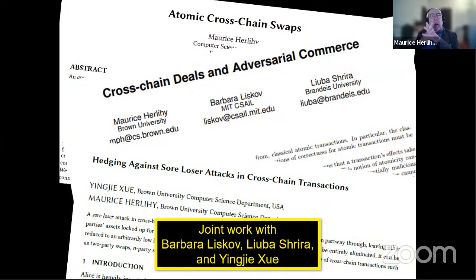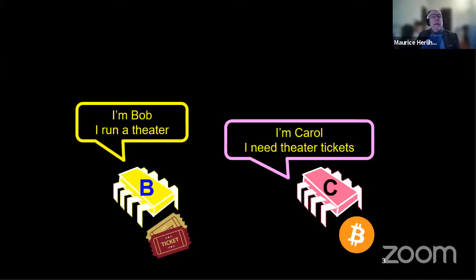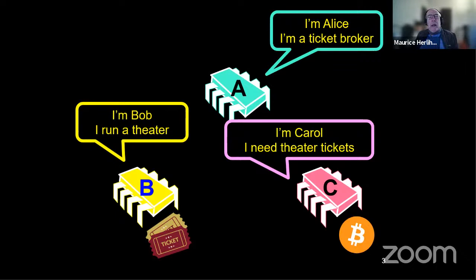So I'm going to talk about something that we call adversarial commerce, which is going to start out sounding somewhat exotic, but eventually is going to look very familiar. So here we have our friend Bob, who runs a theater. We have a friend Alice, who is willing to pay for theater tickets. And Carol has the theater tickets and Alice is a ticket broker. Now all of this happens in the future when everything of value lives on a blockchain or some form of distributed ledger.